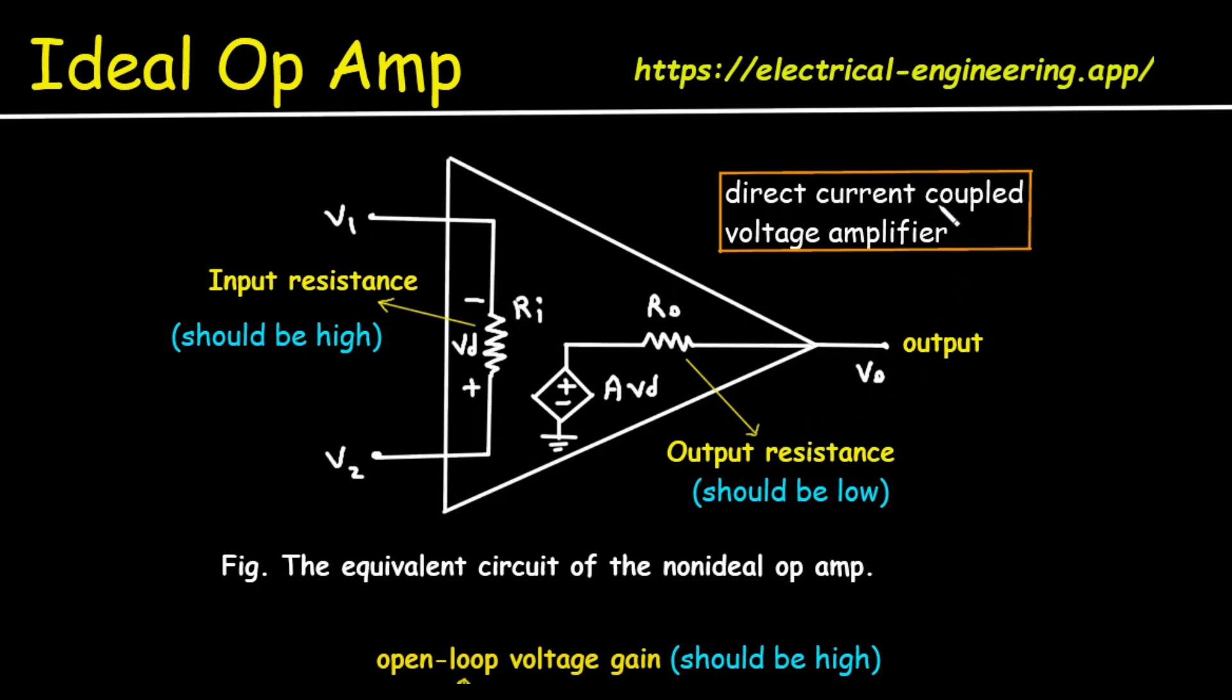It is a direct current coupled voltage amplifier. This is a key feature. DC coupled means the Op Amp can amplify signals of all frequencies right down to 0 Hz, which is DC or direct current. This makes it incredibly versatile, unlike AC coupled amplifiers that block DC signals with capacitors.